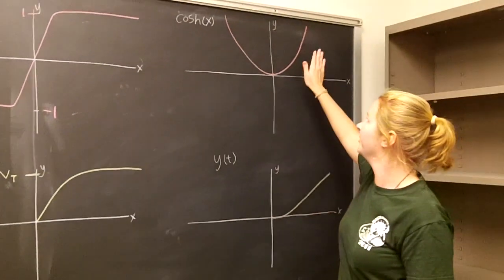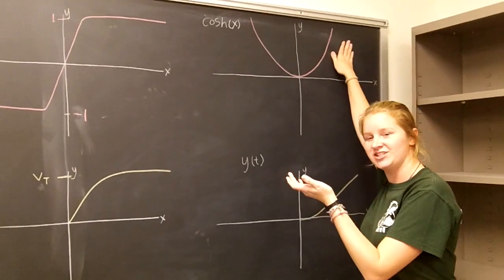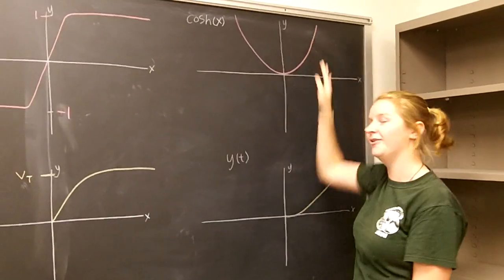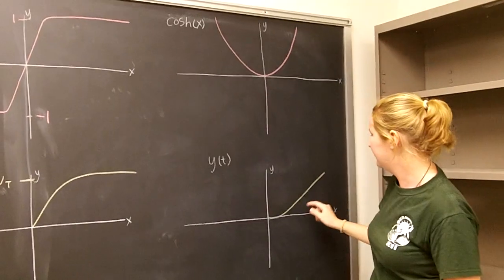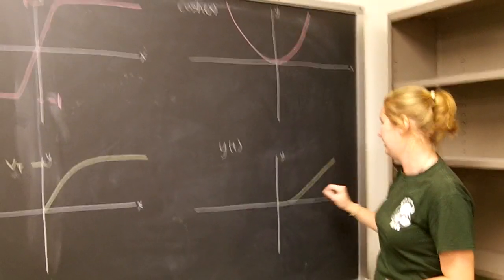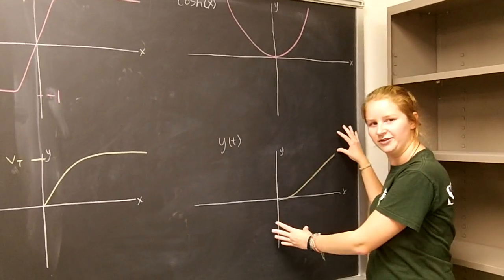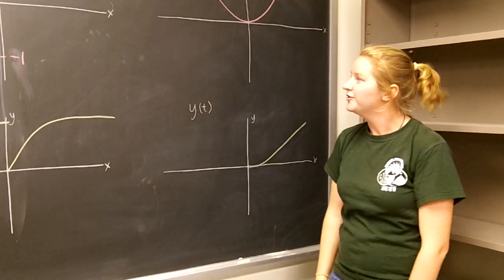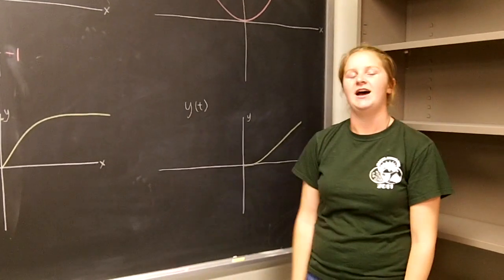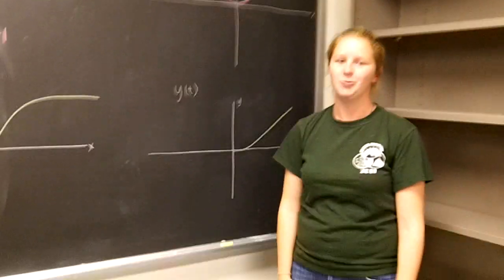And then if we remember what the cosh function looks like, it looks like a parabola, although it's not a parabola. And it would make sense that when we took the ln of this, we would get like a straight line looking function. So yeah, that is an application of how hyperbolic functions help explain quadratic drag.